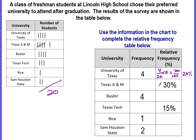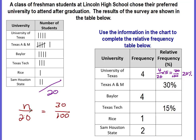Texas A&M is 30 percent. We can use the percent proportion — part to whole equals percent out of 100. The whole is 20 students and our percent is 30 out of 100. We want to find the unknown part: how many out of 20 equals 30 percent. Instead of going from 20 to 100, we go backwards — divide by five. And 30 divided by five is six. So six students represents 30 percent.